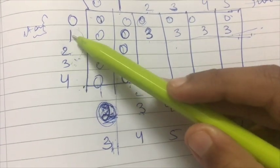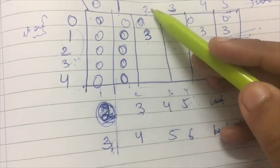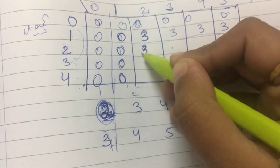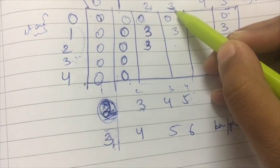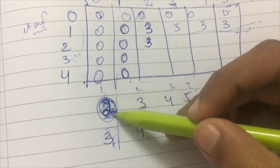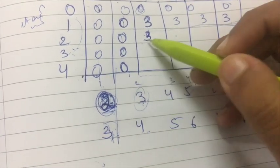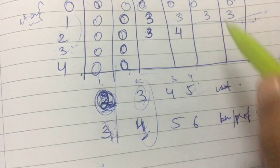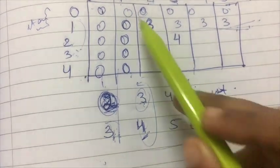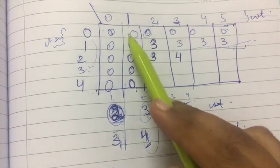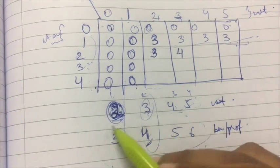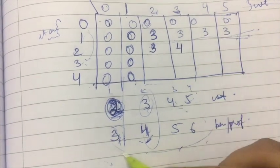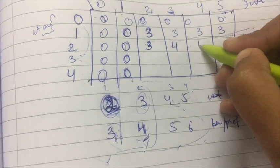Now we move to row 2, meaning either item one or item two or both can be used. For bag weight 2, item one goes in and benefit is 3. For bag weight 3, item two has weight 3 and benefit 4, while item one has weight 2 and benefit 3. I want to maximize benefit, so I put item two in and get benefit 4. For bag weight 4, I also get 4.